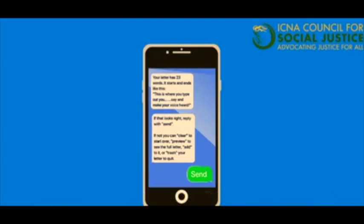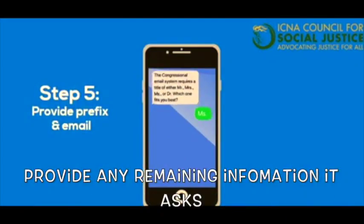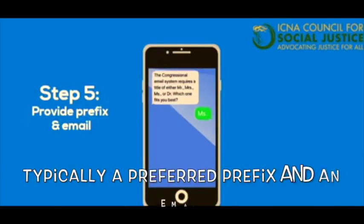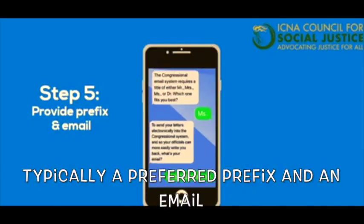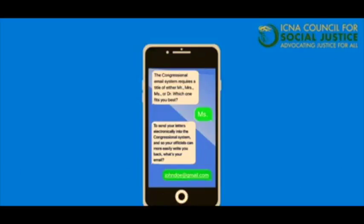Now, the final step — Step 5: Provide any remaining information it asks, typically your preferred prefix and your email. It asks for your prefix because of the way the Congressional email system is set up, and the email you give is the one Congress will respond to you on. So make sure you provide all this information as accurately as possible.